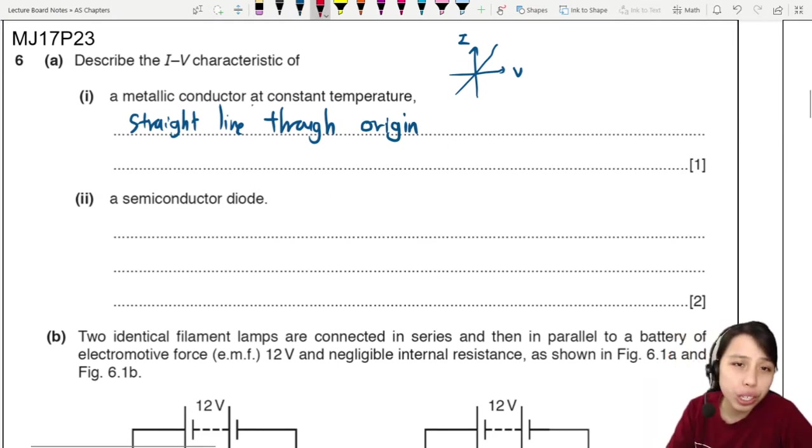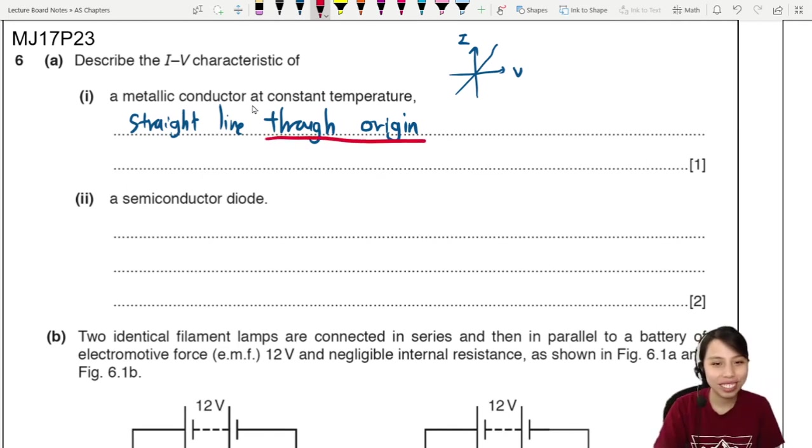You must mention through the origin. Don't just say it's a straight line, okay? You must mention through origin. And this one will be a 1 mark.